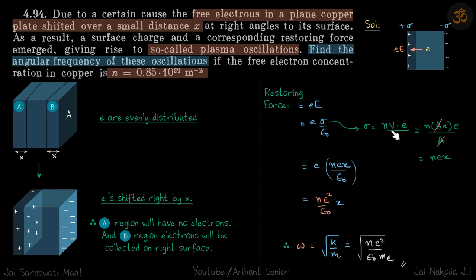The total charge is the number of electrons times e, divided by area A. Since the volume is Ax, we get sigma to be Nex. Therefore, the restoring force is e times Nex over ε₀, which is Ne²x over ε₀.